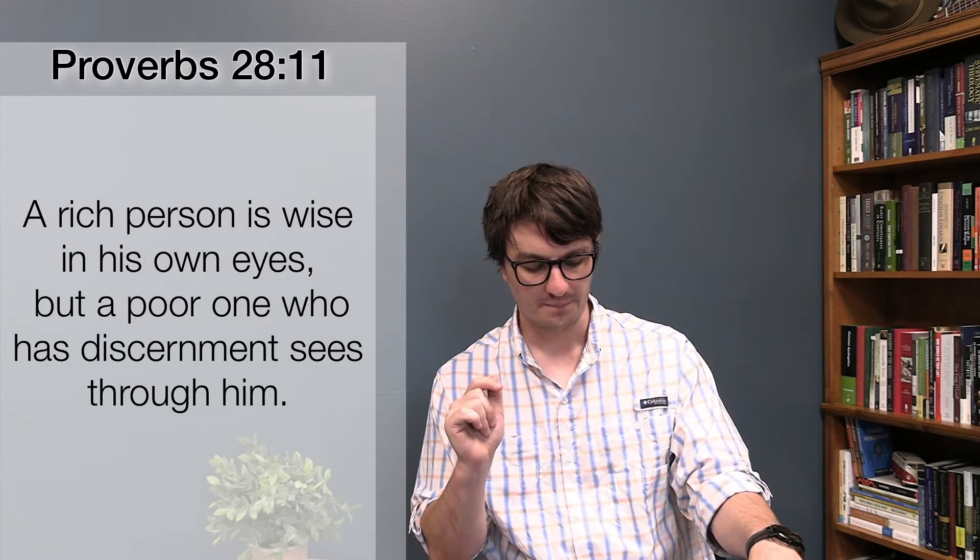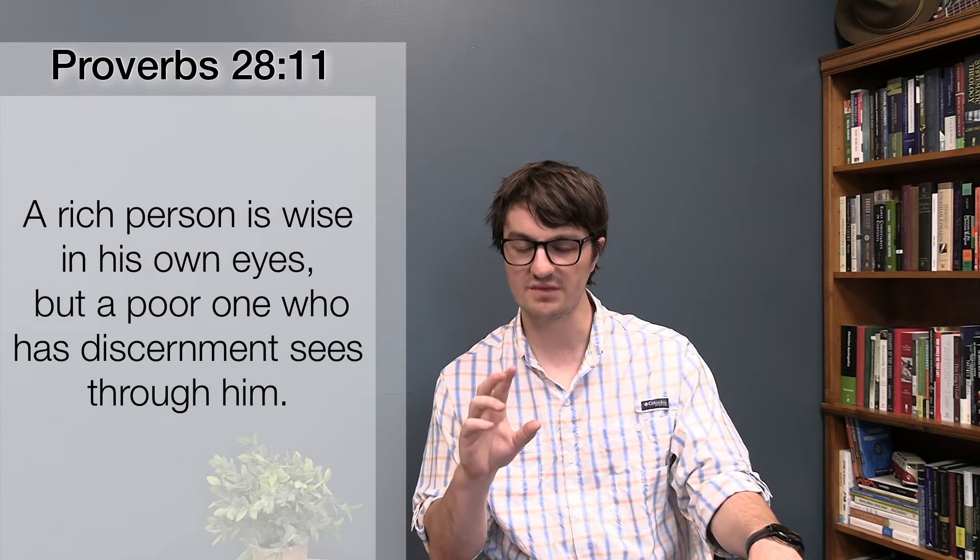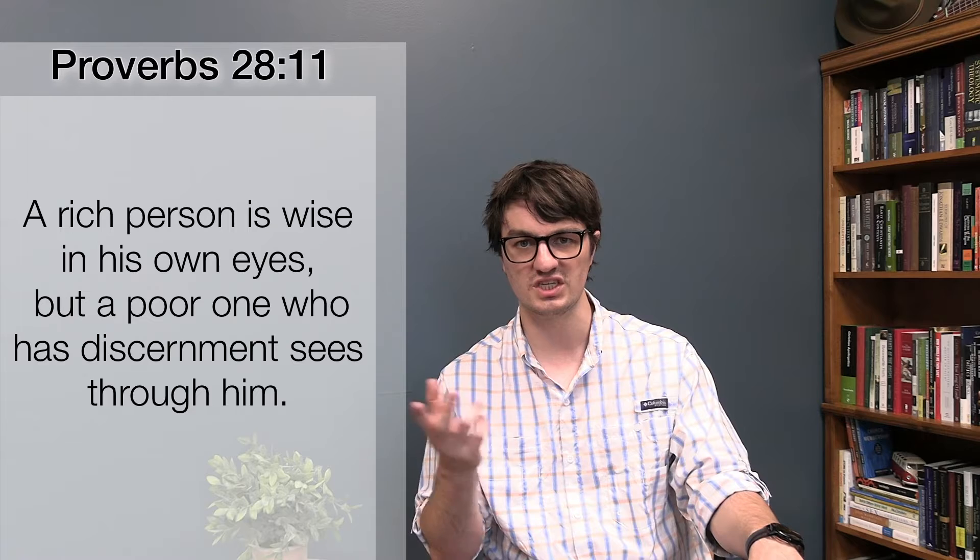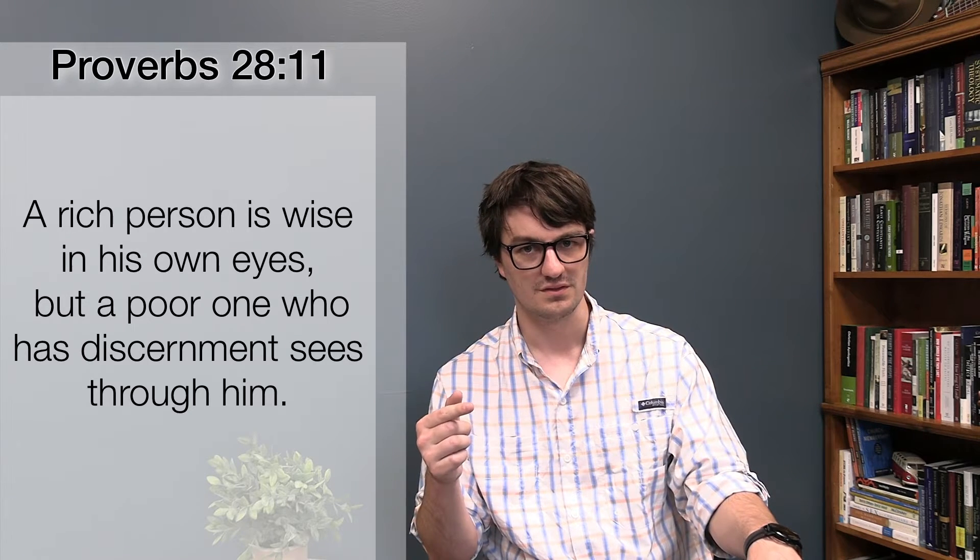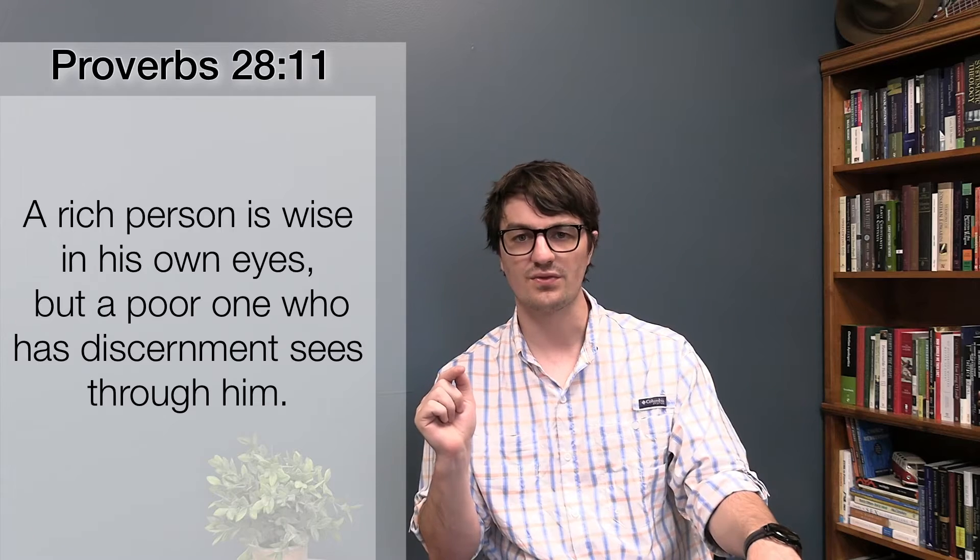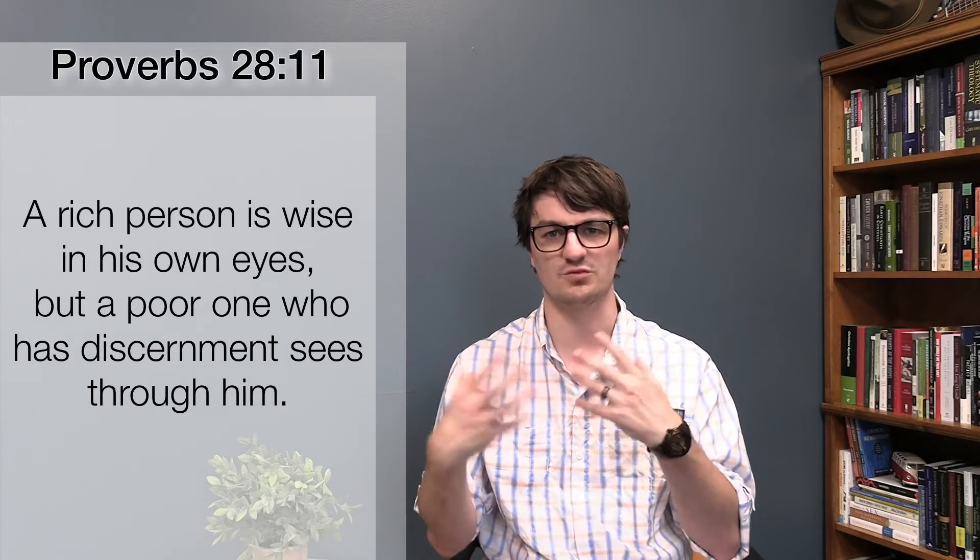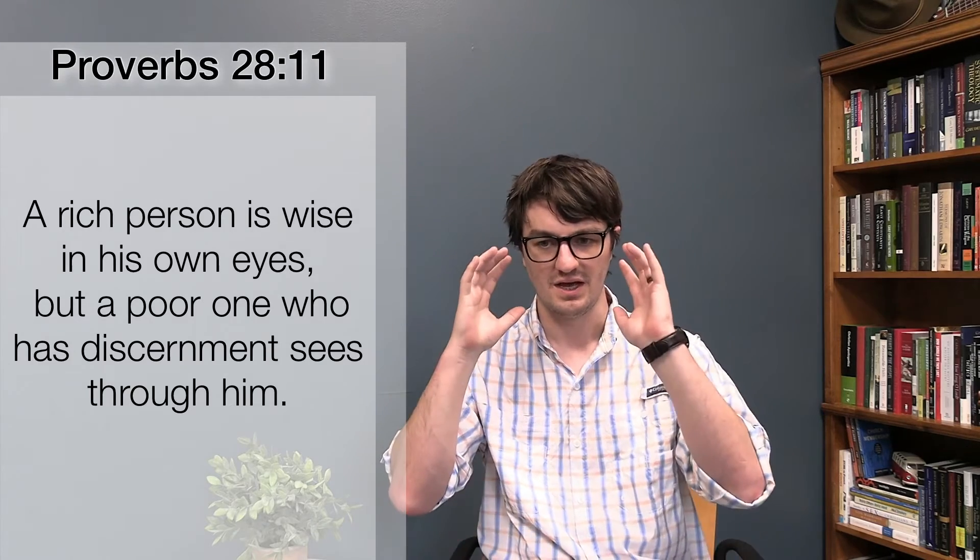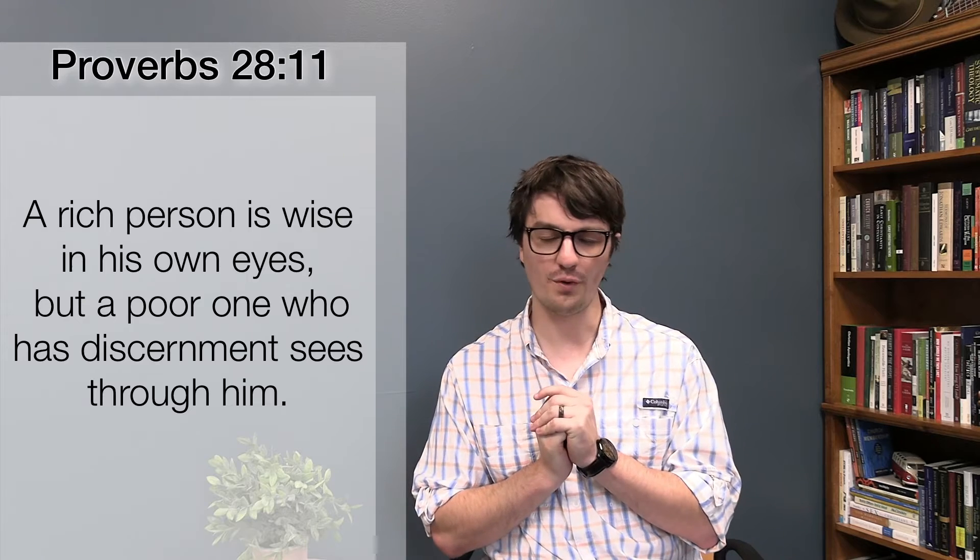Well, then look what it says. But a poor man, which is the flip of being rich, is poor, who has discernment, sees through him. So this rich man is saying, I have all of this wisdom. I have things figured out and I have much to tell you. And this poor man, who, according to earthly thought, should listen to the rich man, he has discernment.